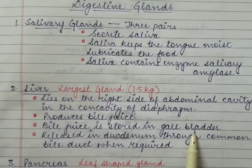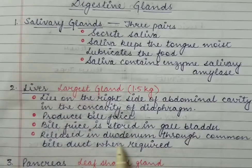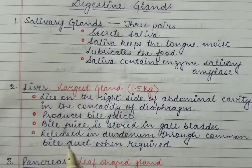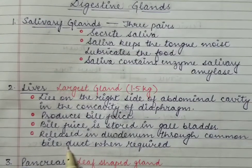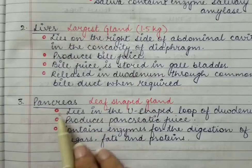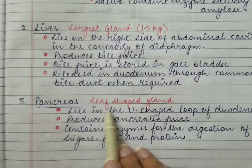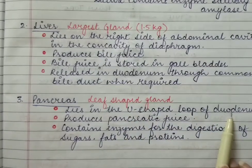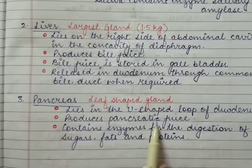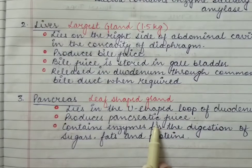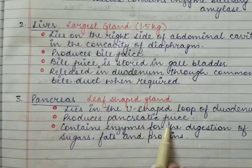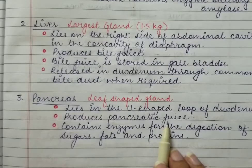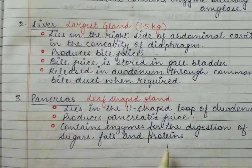From the gallbladder, whenever the need is there, it is released into the duodenum, which is a part of the small intestine, through the common bile duct whenever it is required. Next, we have the pancreas, which is a leaf-shaped gland and it lies in the U-shaped loop of the duodenum. Like the liver produces bile juice, the pancreas produces pancreatic juice, which contains enzymes that help in the digestion of sugars, fats, and proteins.